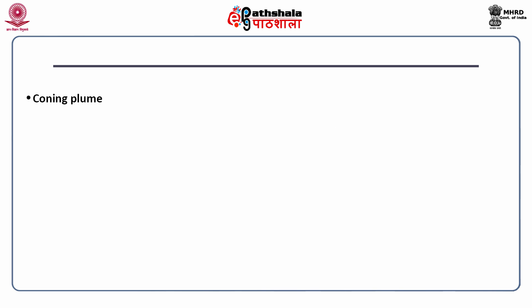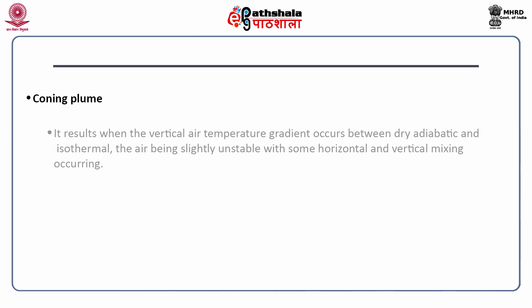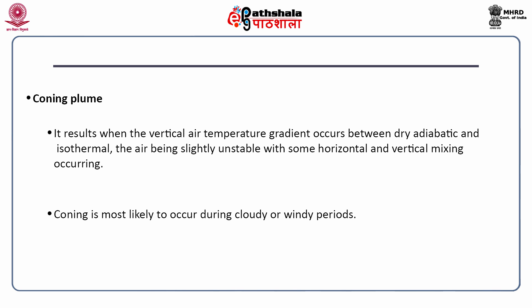The third one is coning plume. It results when the vertical air temperature gradient occurs between dry adiabatic and isothermal, the air being slightly unstable with some horizontal and vertical mixing occurring. Coning is most likely to occur during cloudy or windy periods.